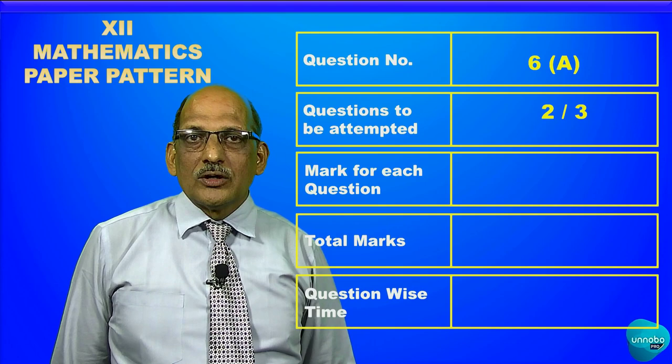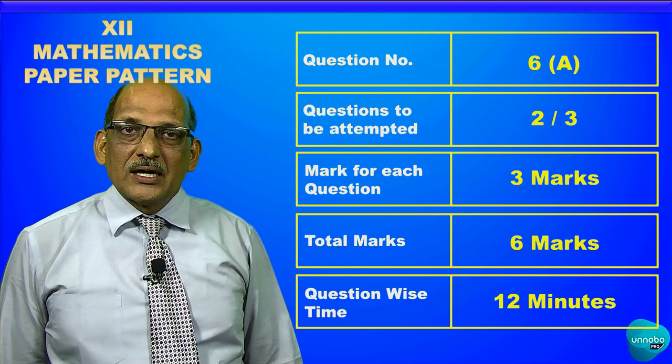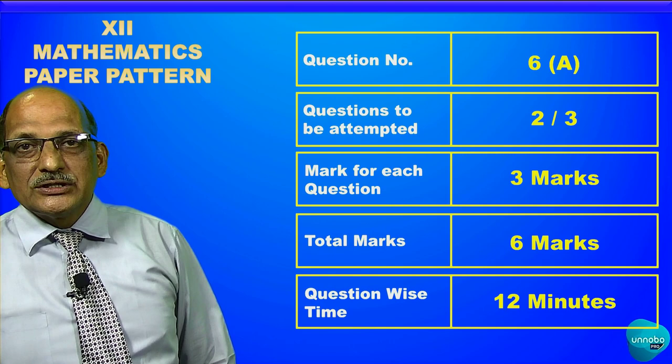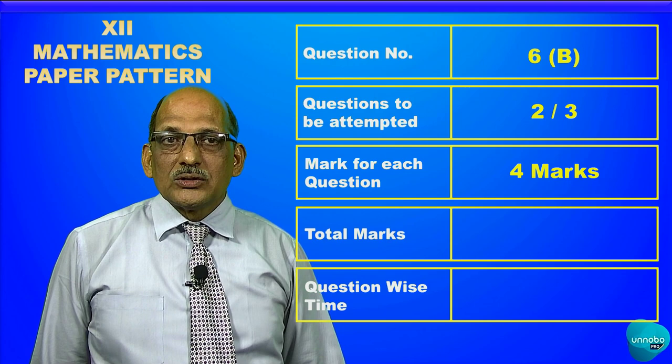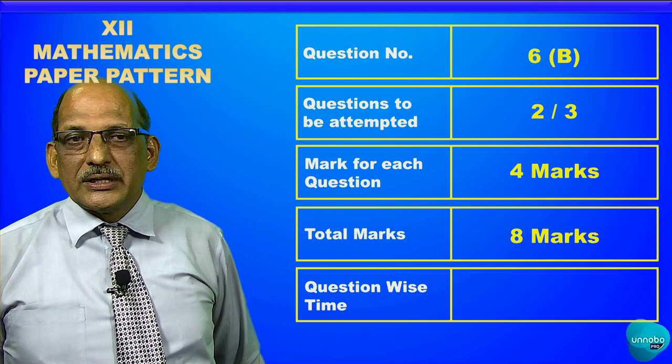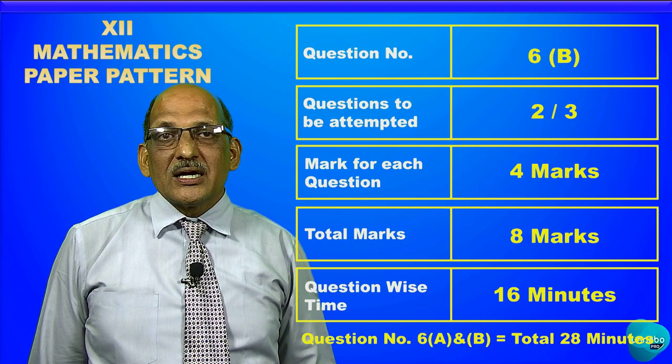In question number 6A, you have to solve two out of three questions. Each question carries three marks, total marks for 6A are six marks, and the total time allotted is 12 minutes. In sub-question 6B, you again have to solve two out of three, each question carrying four marks. Total marks for question number 6B are eight marks, time allotted is 16 minutes. Question number six including sub-questions A and B has to be completed in 28 minutes.